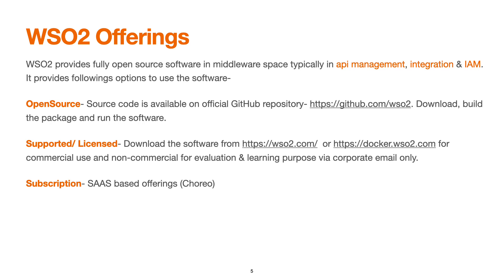The supported license is for commercial use and non-commercial evaluation and learning purposes via a corporate email only — you must provide a valid corporate email address. For subscription-based offerings, WSO2 has SaaS platforms such as Choreo for API management, integration, and analytics, and other products for identity and access management.